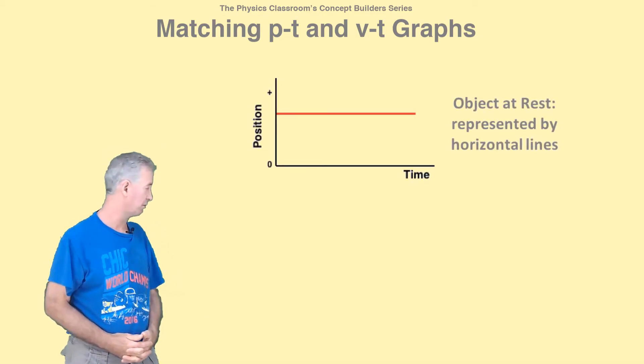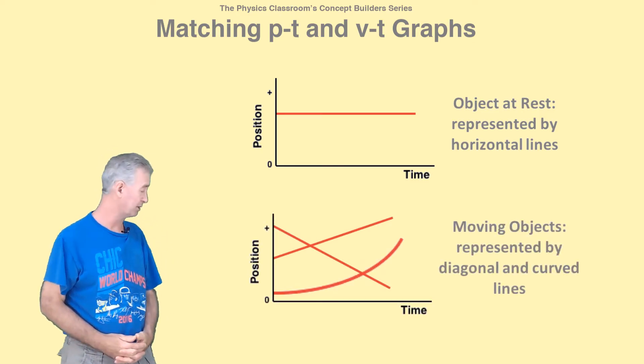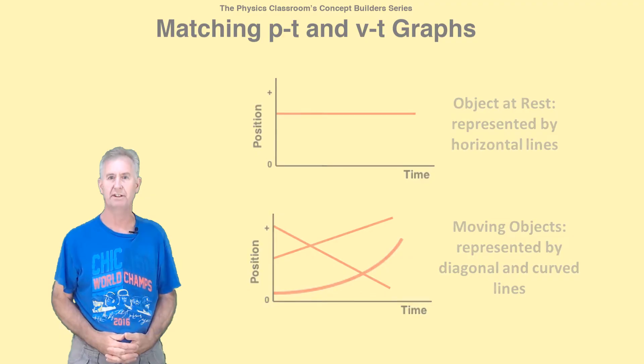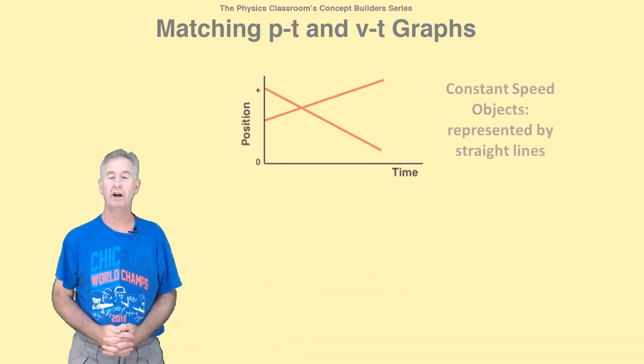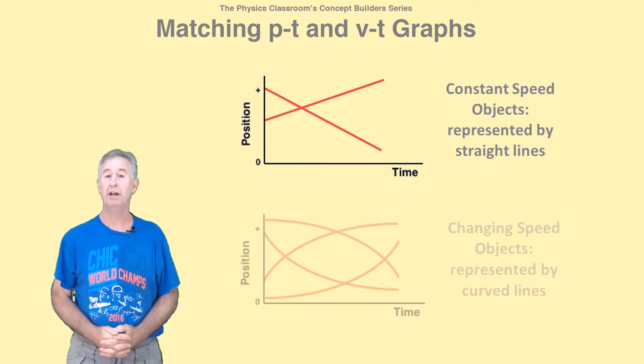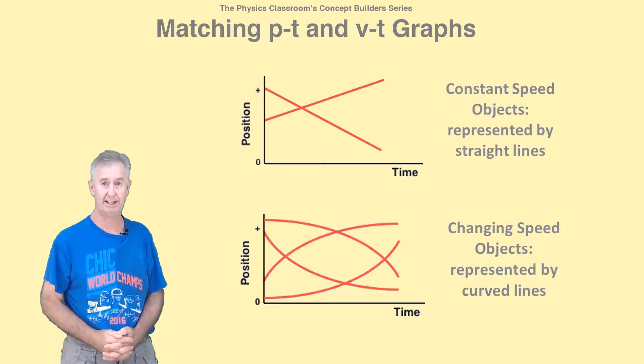So here's the skinny on PT graphs. At rest objects are represented by horizontal lines. But moving objects are represented by lines with slope, either positive or negative, but they aren't horizontal. Objects moving with constant speed are represented by straight diagonal lines. But objects moving with changing speed are represented by one of these four curved lines.